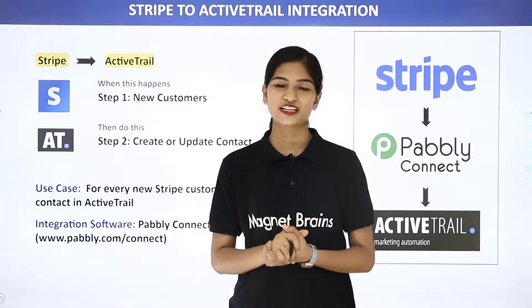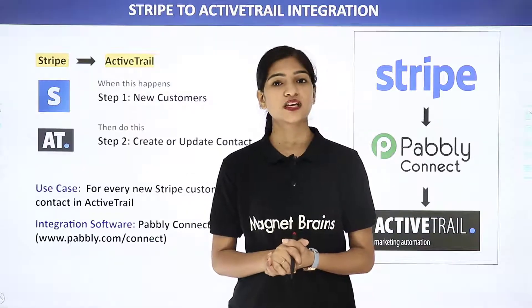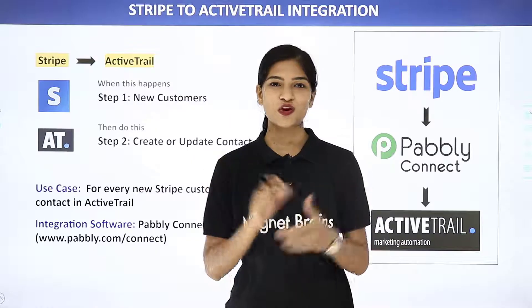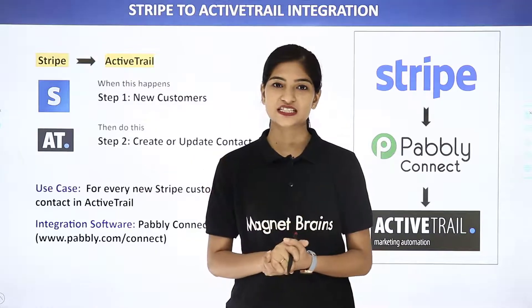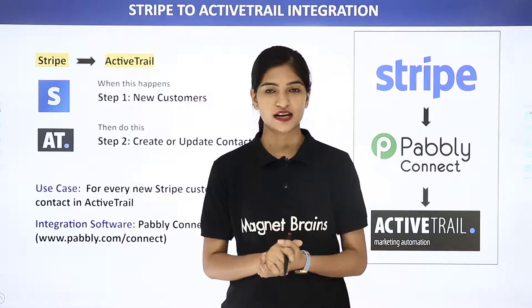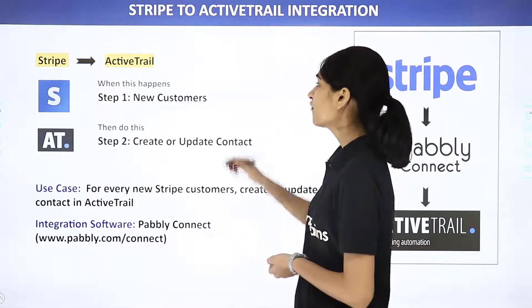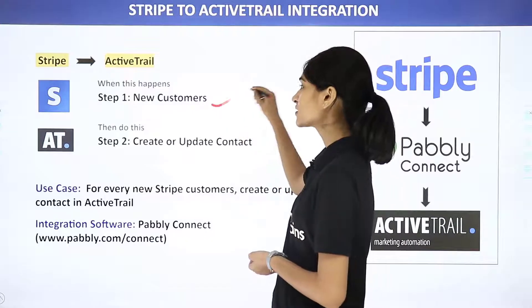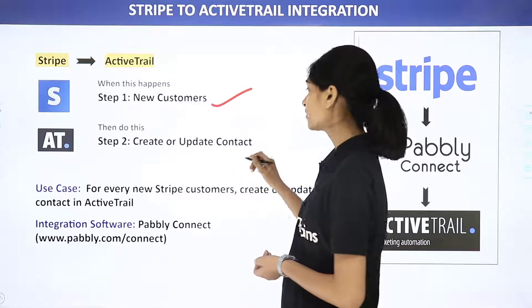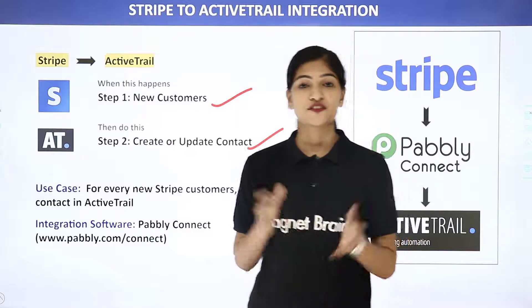Hello everyone, welcome to Pabbly Connect. Today in this video, we are going to integrate two software applications, Stripe and ActiveTrail. The use case here is, whenever there is a new customer in Stripe, we want to create or update a contact in ActiveTrail.